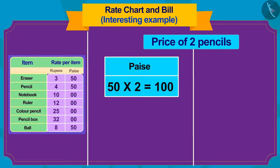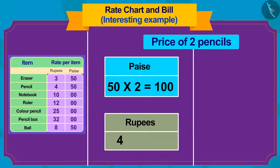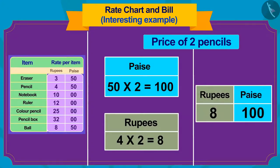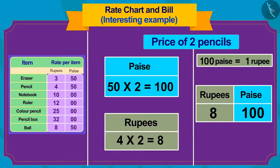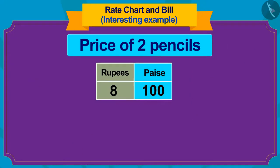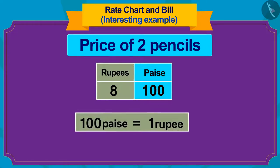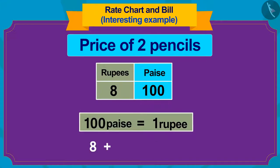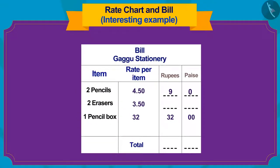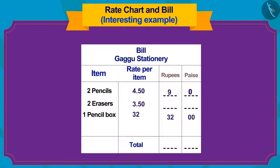Now we will multiply the number 4 in rupees by 2, and that would be 8 rupees. But how much rupees is 100 paise? That's right! If we add paise and rupees, the value of two pencils will be 8 plus 1, or 9 rupees 0 paise. We will write it in the bill in this way.